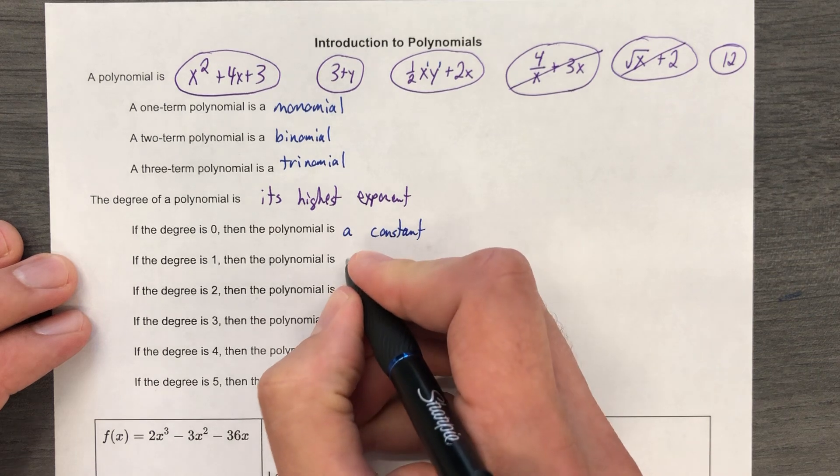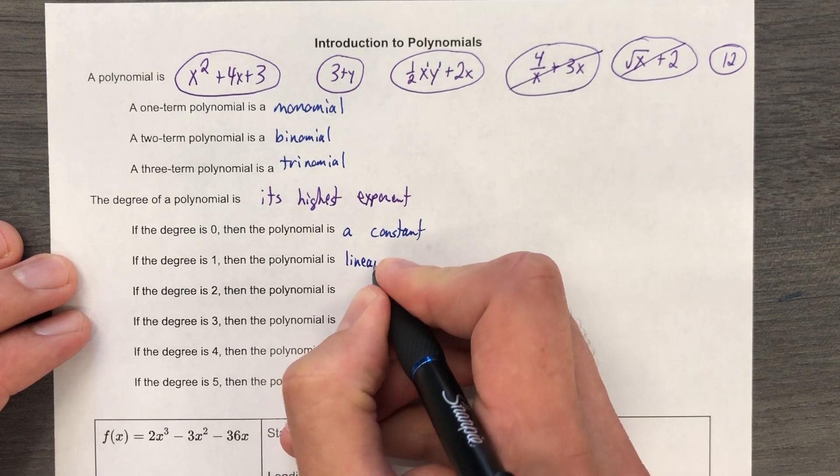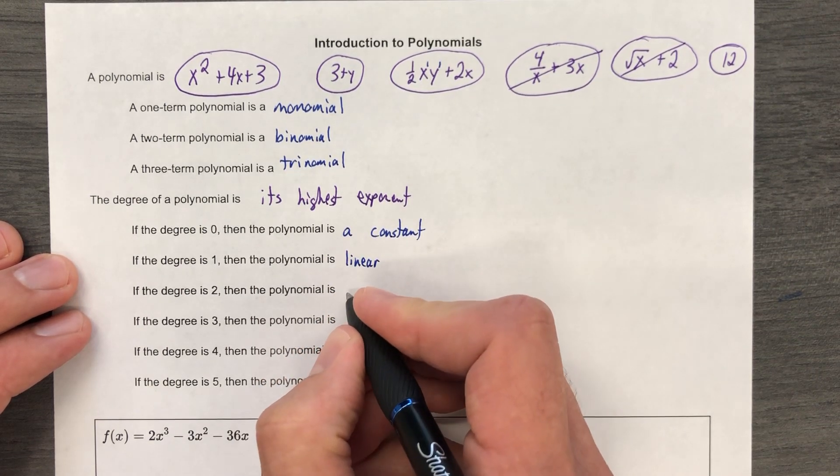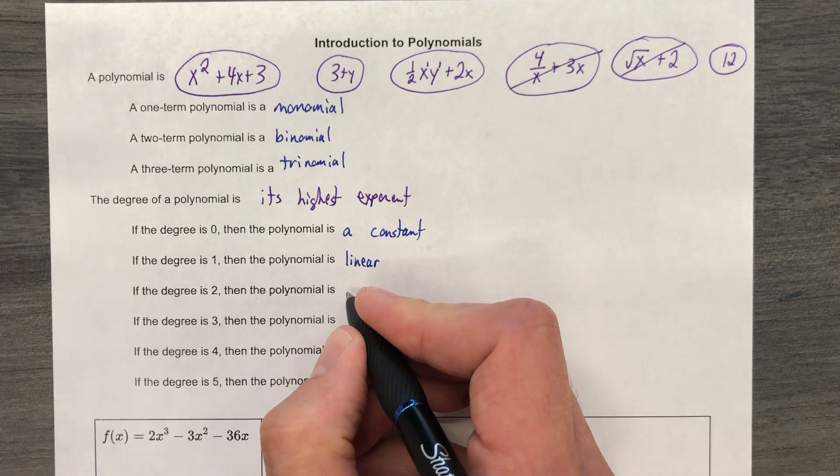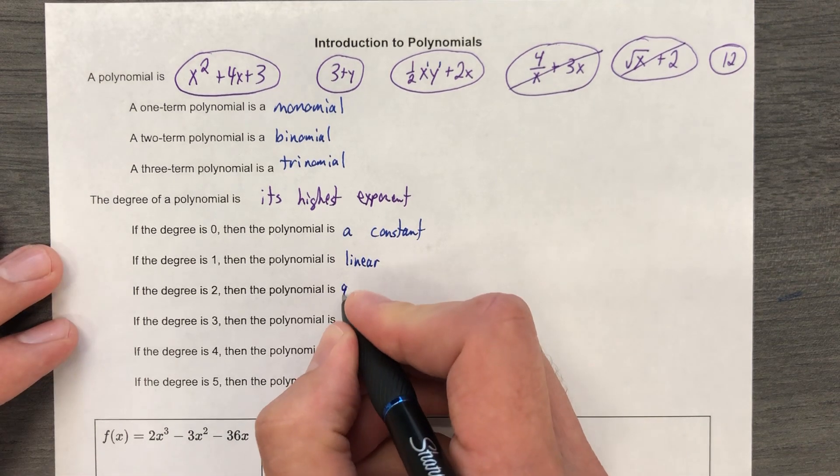If the degree is 1, the polynomial is, you've seen this before, this is linear. If it's 2, it is, a lot of people say it's a parabola. The graph is a parabola, but technically it's quadratic.